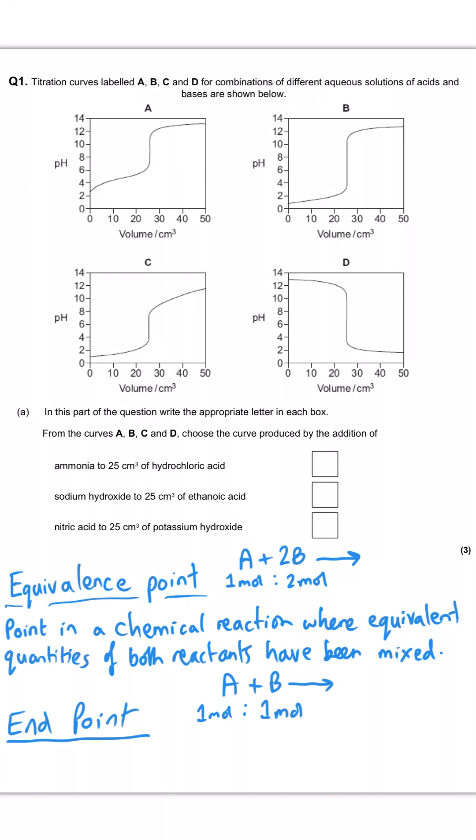Whereas the end point is the stage in a titration where your indicator changes colour, or if you're not using an indicator in a redox titration, where there is a colour change. Now for a titration to be effective, the equivalence point and the end point need to coincide. And that's at the heart of all of the questions that we're going to look at today.